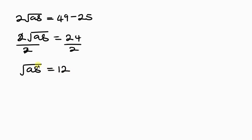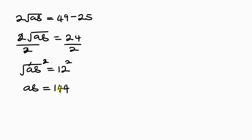To get rid of this square root, we have to square both sides. Squaring both sides, this square cancels out the square root, leaving behind AB equal to 12 squared, which is 144. We've got another equation, so we can call this equation 4.